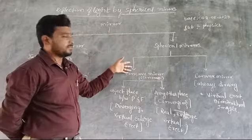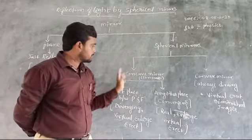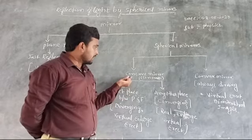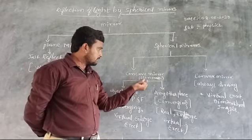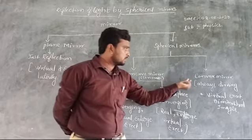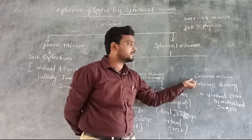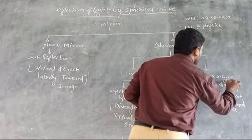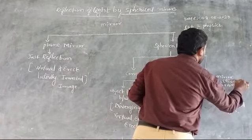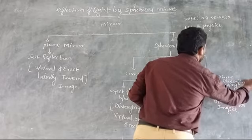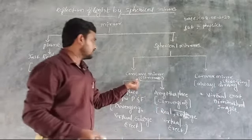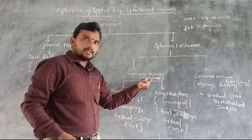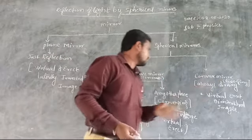Spherical mirrors are classified into two types: the concave mirror and the convex mirror. The concave mirror acts as a converging mirror, and the convex mirror acts as a diverging mirror.